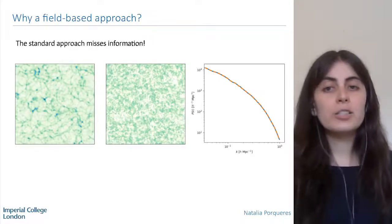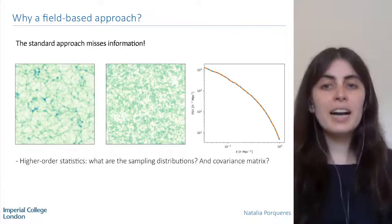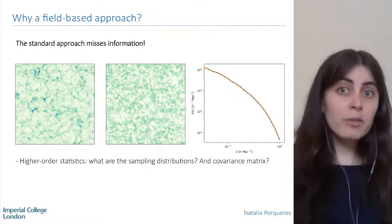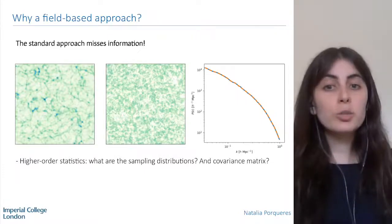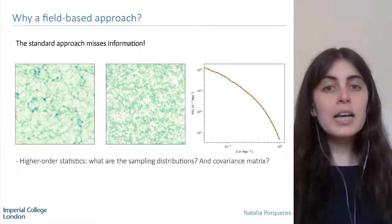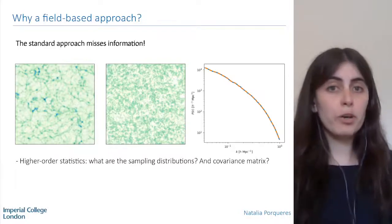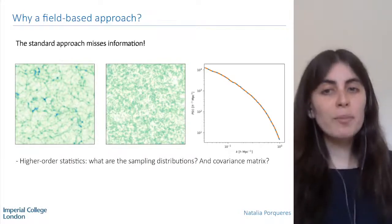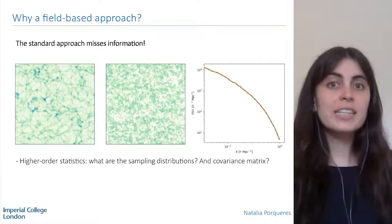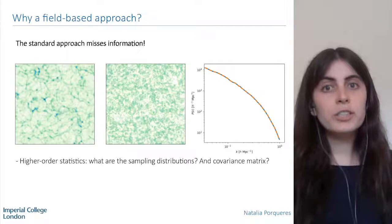One way to access this additional information is to use higher-order statistics — keeping the data compressed into summaries but adding higher-order correlation functions. This would allow us to extract more information, but it is usually very challenging. We don't know the sampling distributions of these quantities, and even assuming a Gaussian likelihood, computing the covariance matrix accurately is difficult. This approach is also problematic because we never know when to stop — we can always come up with new higher-order statistics and don't know when we have exhausted all the information in the data.